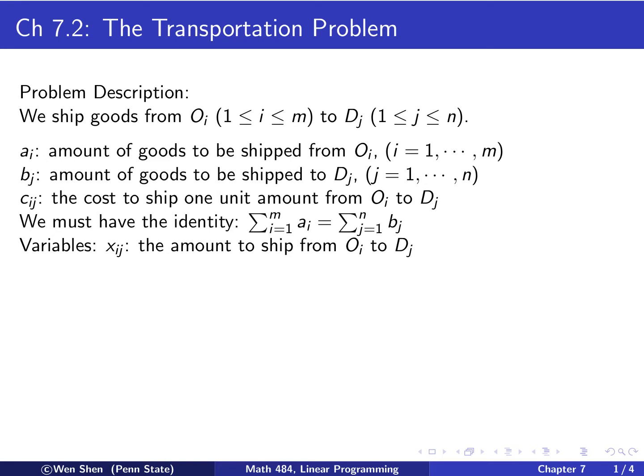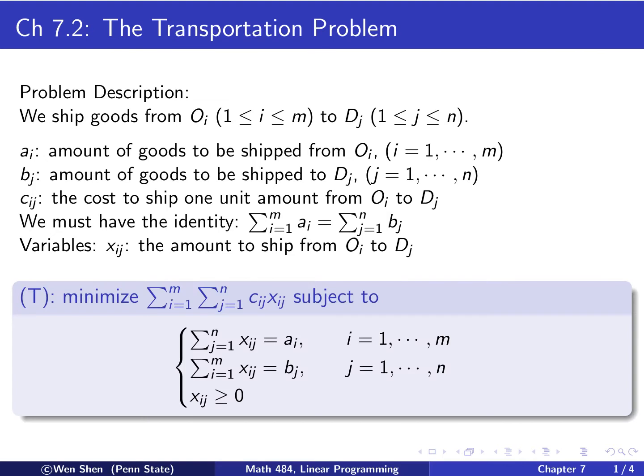We define the variables Xij as before, the amount to be shipped from OI to DJ. Now we can formulate a mathematical problem, an optimization problem. We compute the summation of Cij times Xij, summing over all I's and all J's, a double summation. This becomes the total cost. The goal is now to minimize this total cost. We call this problem T, T for transportation.